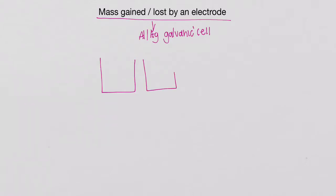So our standard setup for a galvanic cell. There's our salt bridge, our voltmeter and our two electrodes.